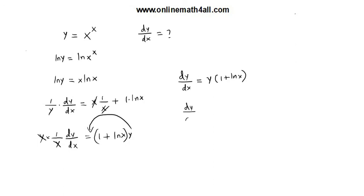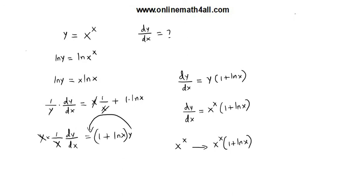So dy over dx is equal to — from the given equation, we know that y is equal to x to the power of x. So here y can be replaced by x to the power of x, giving us x to the power of x times 1 plus ln x. The derivative of x to the power of x is x to the power of x times the quantity 1 plus ln x. I hope this video will be useful for students who study calculus. If you like this video, please subscribe to our channel. Thank you.